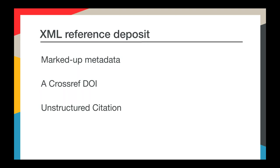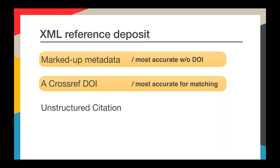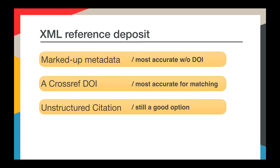We use reference parsing technology to break unstructured references up into parts wherever we can. The most accurate reference will include a DOI, since we can easily match that to a metadata record. If you don't have DOIs, we recommend submitting references as marked-up XML, as we're able to make very good matches that way. Unstructured citations are not as forgiving — it's not easy to pull relevant fields from a block of text. We can usually match well-formatted journal and book references, but we aren't as successful with messy data or unconventional citations.